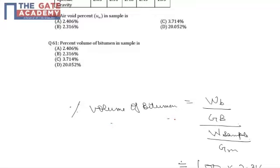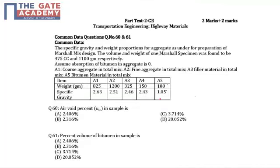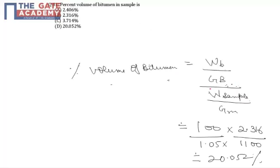The percentage volume of bitumen in the sample is given by Wb, that is weight of bitumen, upon specific gravity of bitumen, which is said that 100 grams of bitumen of specific gravity 1.05, and upon weight of one specimen or one Marshall specimen, is to bulk density of Marshall specimen which is 2.316, and weight of the sample is given as 1100.